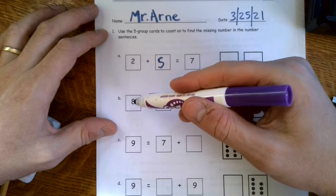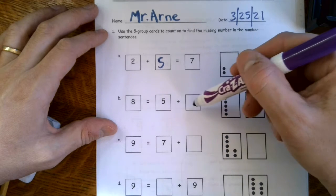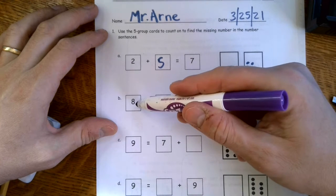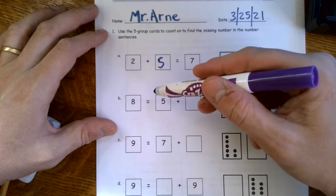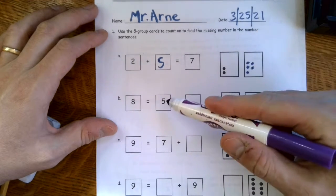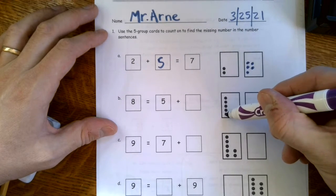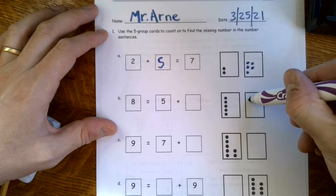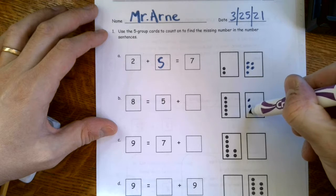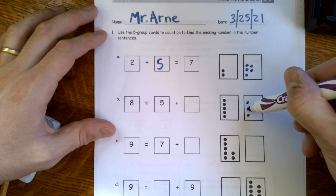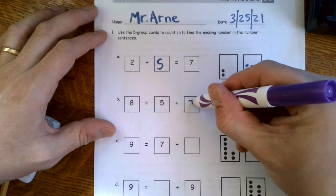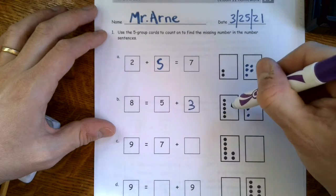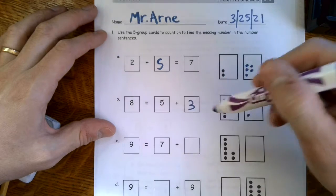Here we go. Eight equals five plus... oh my goodness. So they already have to give us the answer over there on the left side instead of the right side. So let's see. We have five. One, two, three, four, five. Now we get to eight. That was five, six, seven, eight. And there we go. One, two, three. Stick those in there. And we know that three plus five, three plus five equals eight.